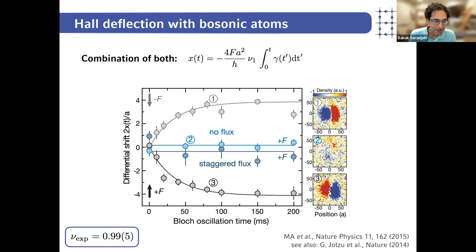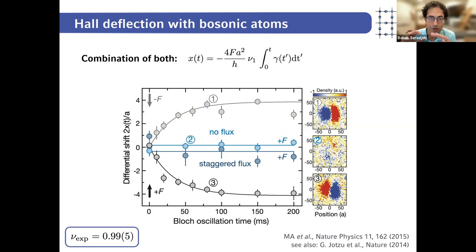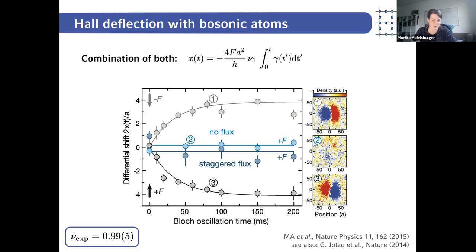A final question confirmed that the flux per unit cell is tunable from 0 to π by adjusting the geometry of the laser beams. When asked about spatial modulations of the hoppings — for example SSH-type models — the speaker confirmed that SSH-type systems are relatively easy to realize and have been demonstrated in a number of labs, while other types of spatial dependence require more engineering.